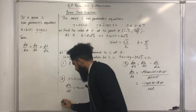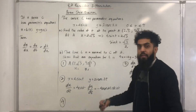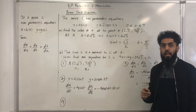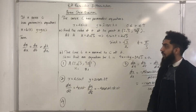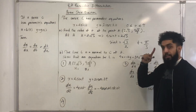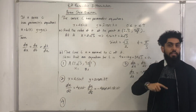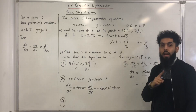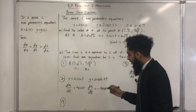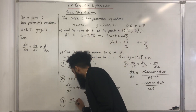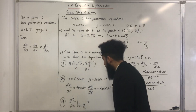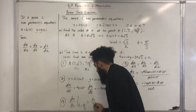Step number 4: I can now find the gradient of the tangent to curve C at point A. I know that at point A, t is equal to pi over 3. So if I substitute t equal to pi over 3 into dy over dx, that gives me the gradient of the tangent. dy over dx, when t is equal to pi over 3, is equal to 4 over 3.